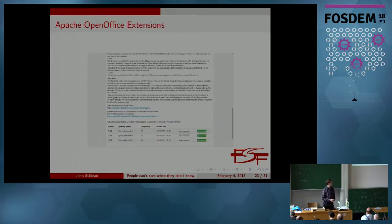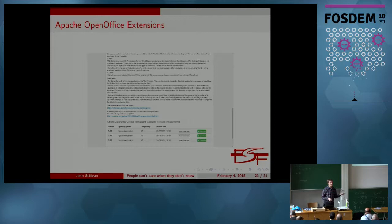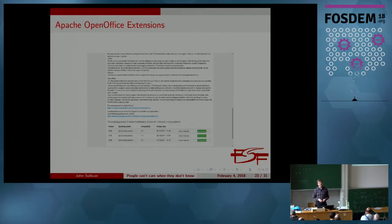Before LibreOffice we had OpenOffice, which became an Apache project. This is the same core diagrams extension in the Apache OpenOffice repository. You can see a similar release listing format at the bottom, but it happens to be missing the license column — so they aren't conveying that same kind of information. My understanding is that proprietary extensions are permitted in the Apache OpenOffice extension repository. Since there's no license field for a free extension, there's probably no license field for a proprietary extension either.